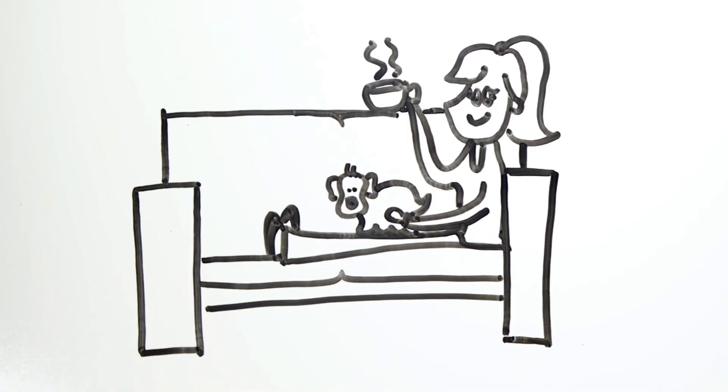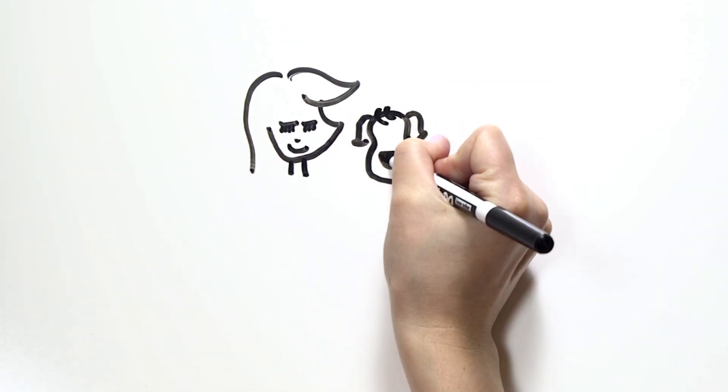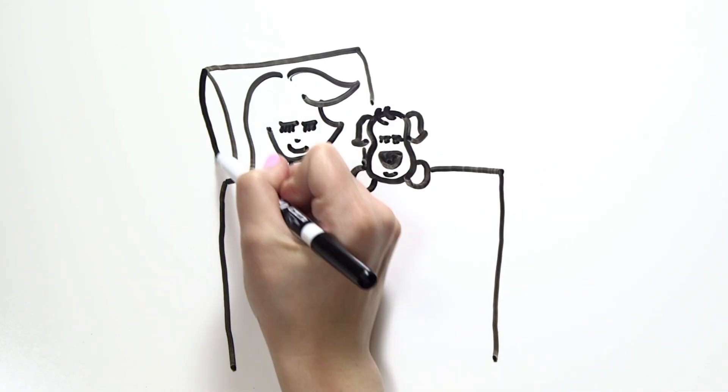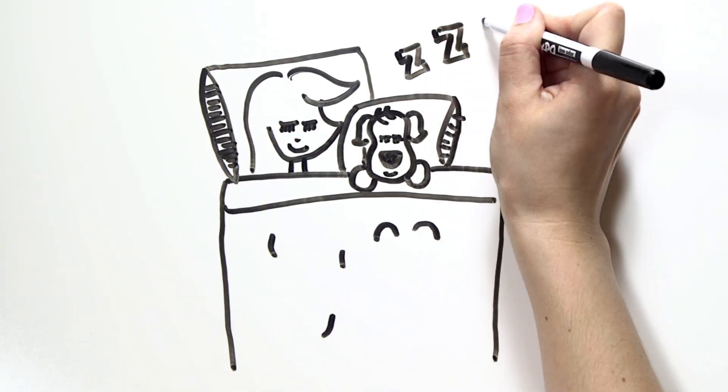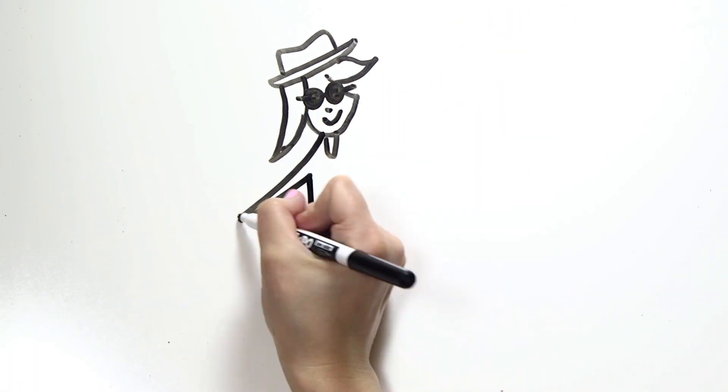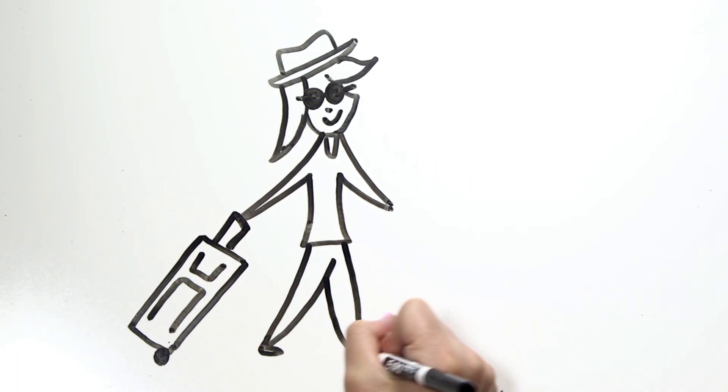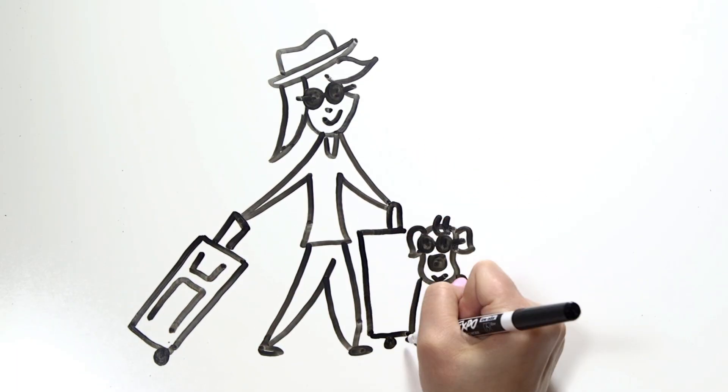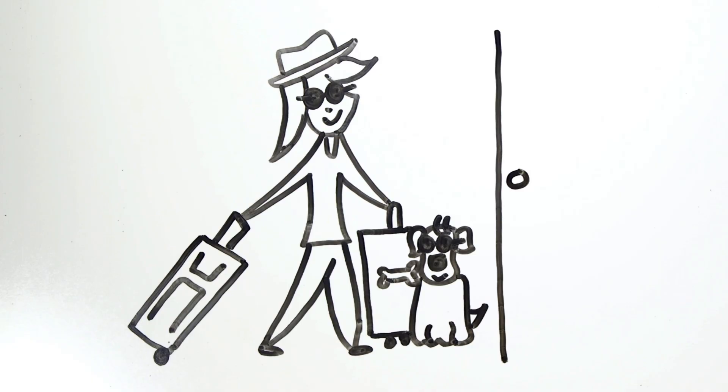Once your body adapts, your wallet will thank you. And at night, you can nudge that thermostat down a little more. Your pajamas and blankets will help keep you cozy. Going on vacation? You can set your thermostat to around 55 degrees to save even more energy without worrying about your pipes freezing.